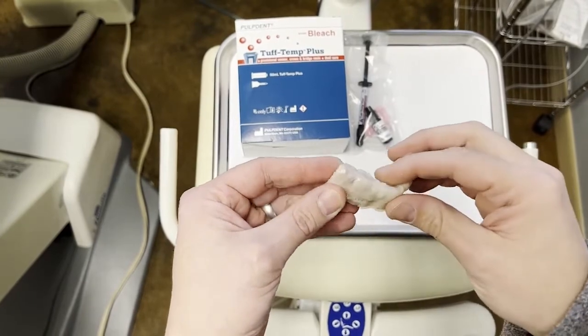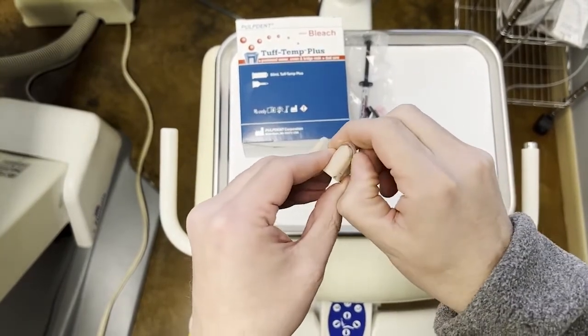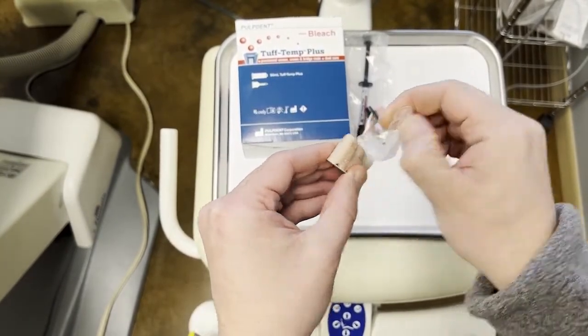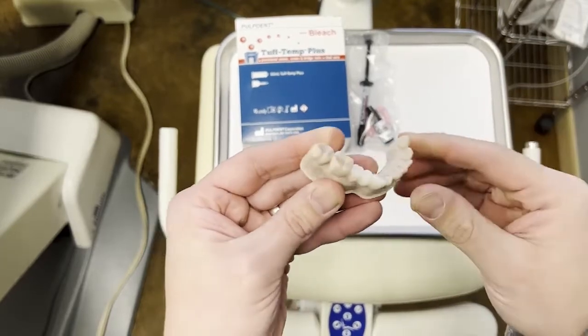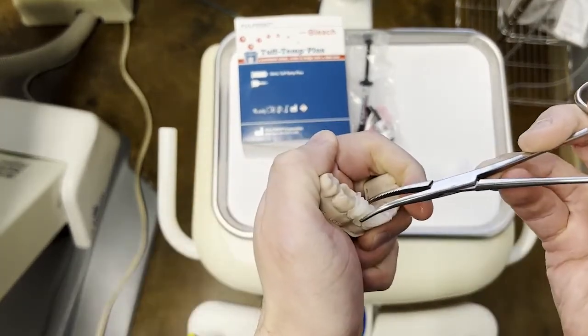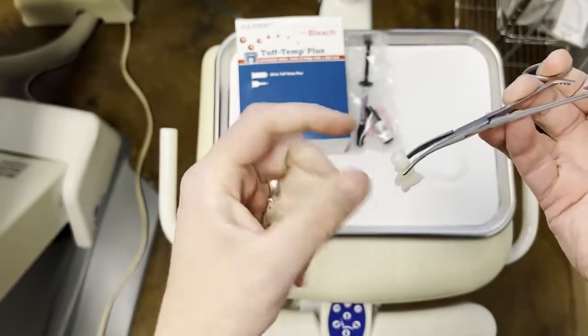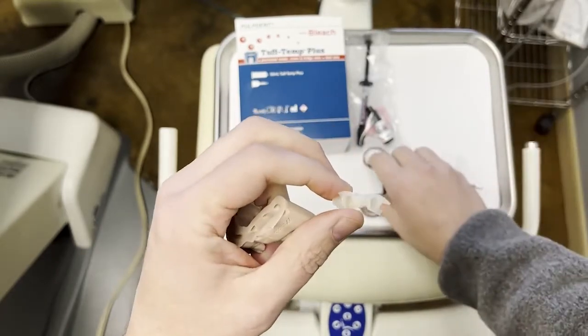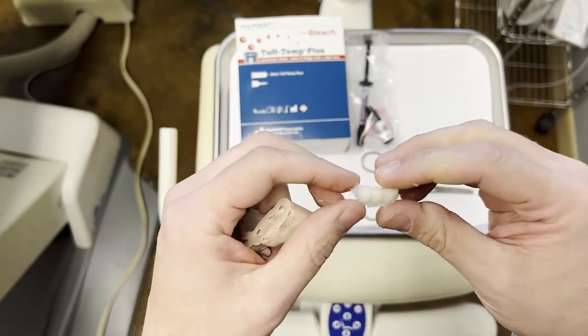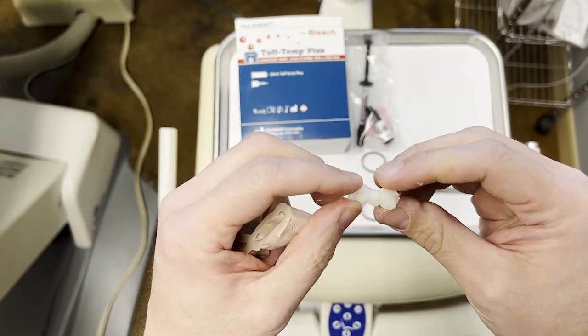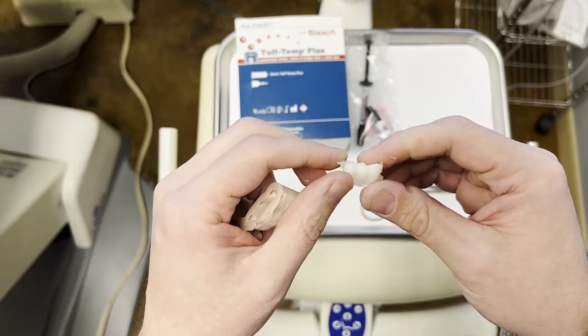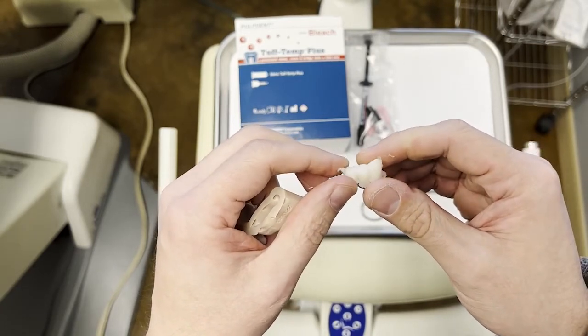Now we're ready to remove our matrix and then work the provisional off of the tooth. There we go. So now we have our provisional started and now we just need to start trimming this to get the best anatomical results possible.